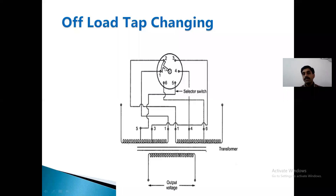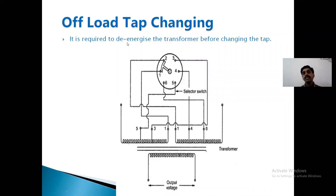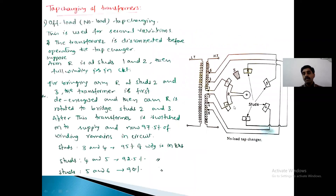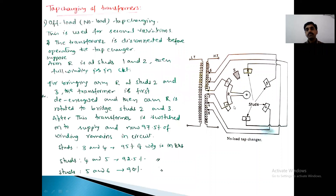On the primary side, there is an option to change the turns — the number of turns to be included can be changed so that the secondary output can be obtained. It is required to de-energize the transformer before changing the tap. On the HT side we have taps; presently the tapping is at 1 and 2, meaning this entire section is included. So the total high voltage winding — 100% winding — is in the secondary side.